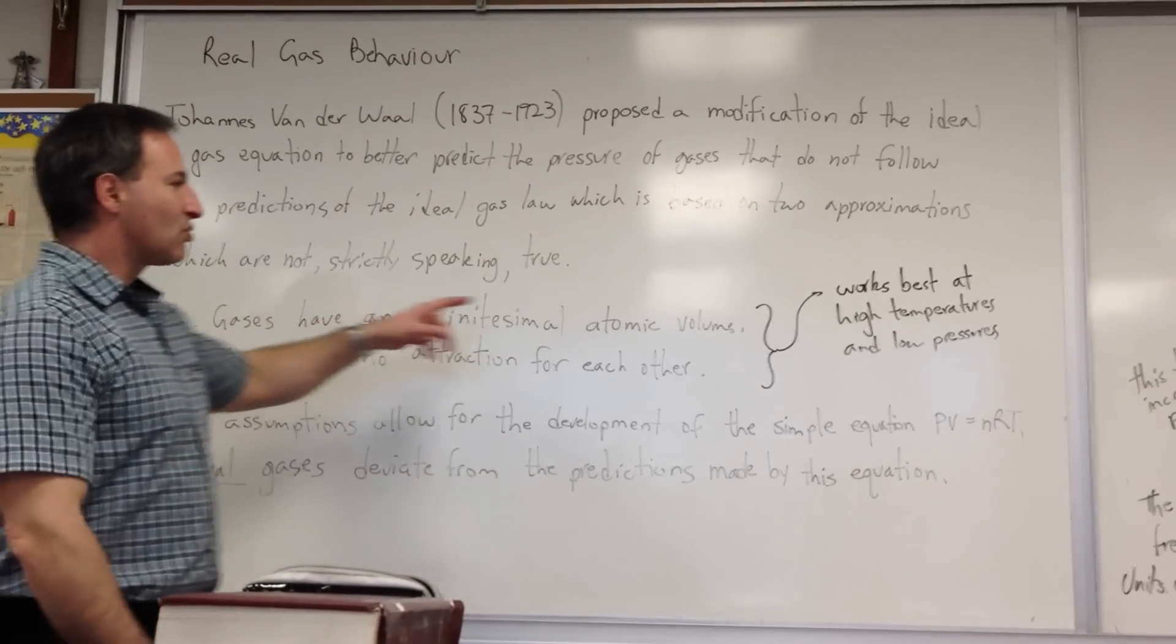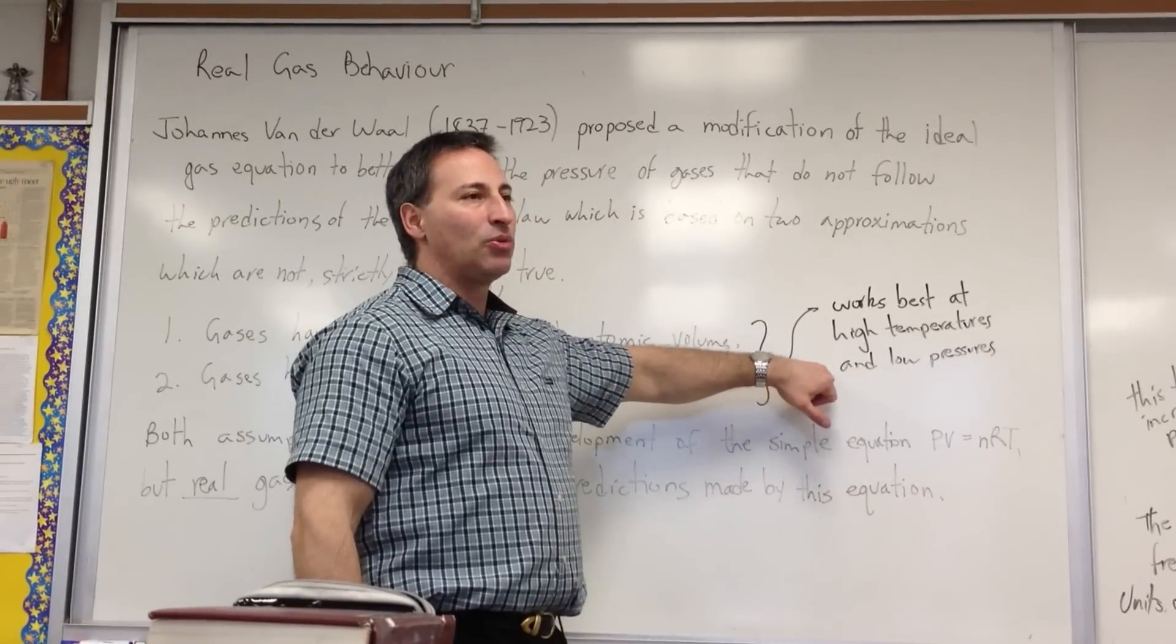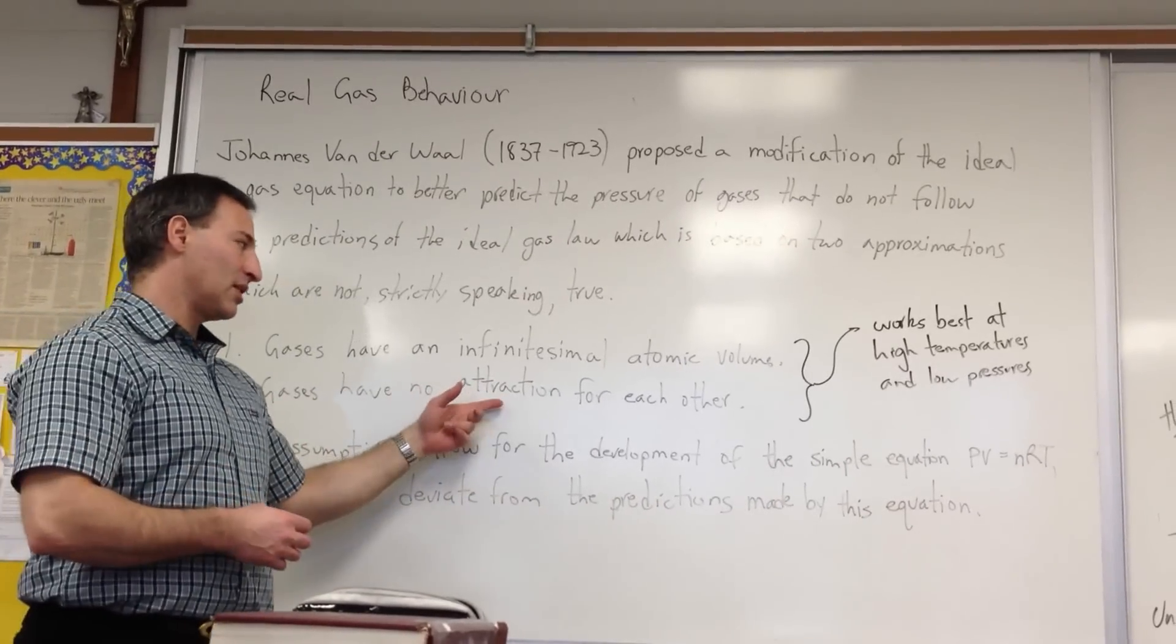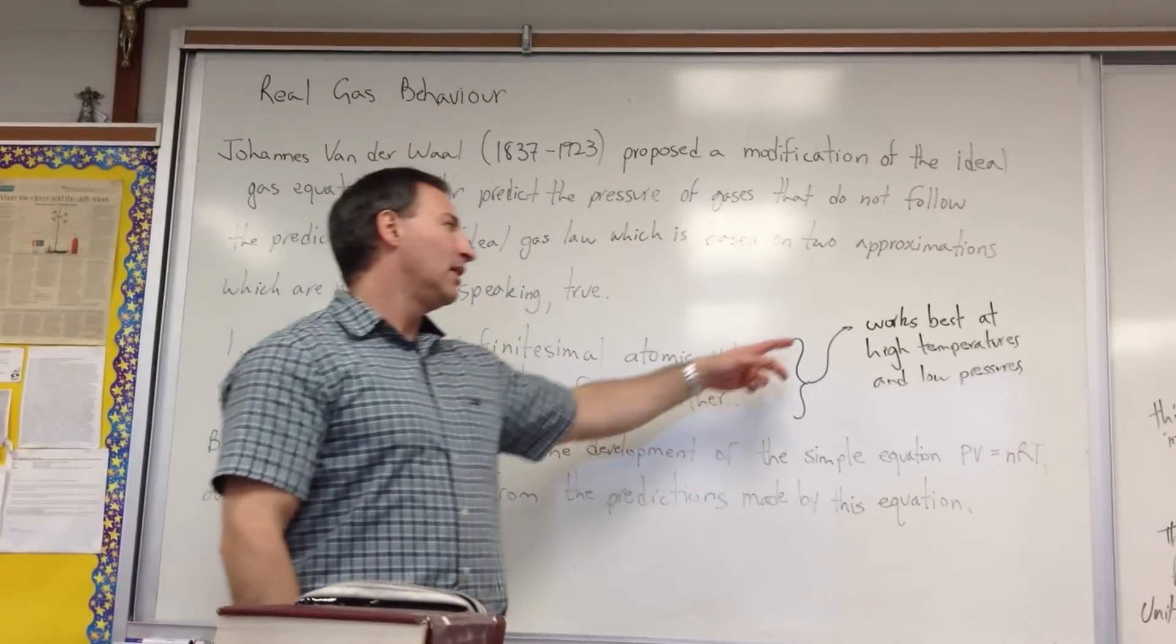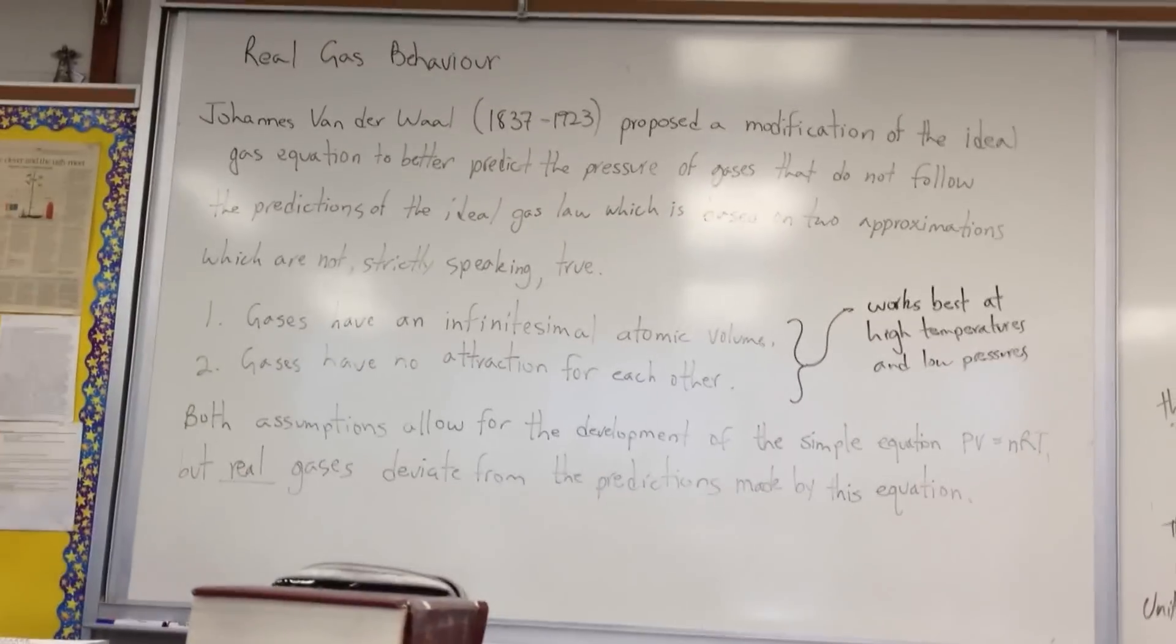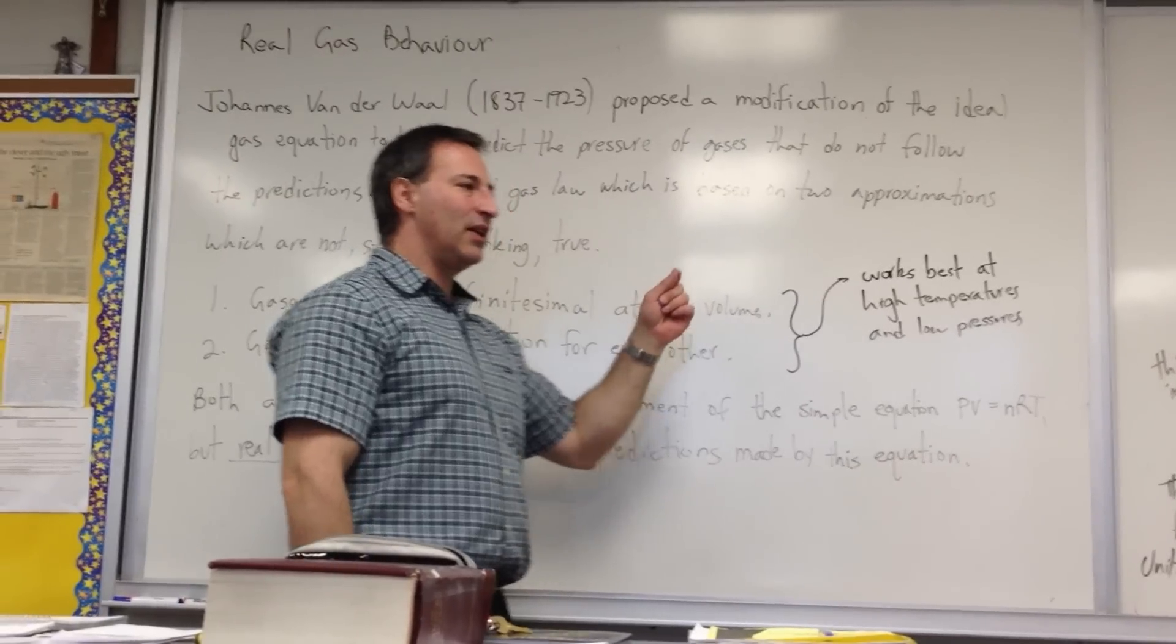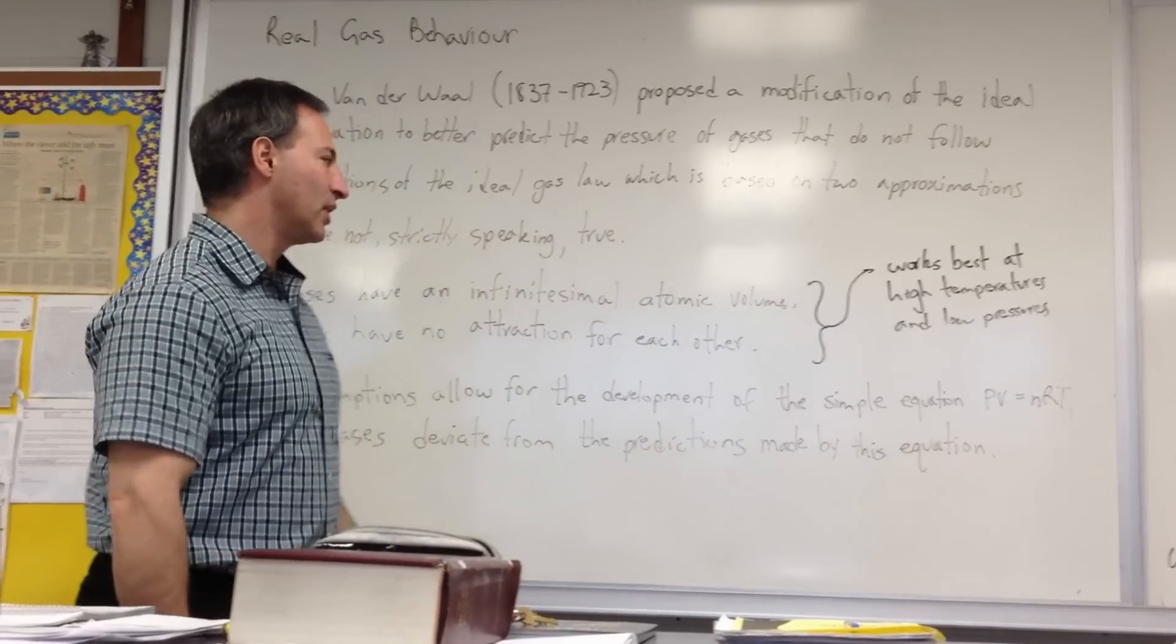And these two assumptions work best for gases that are at high temperatures and low pressures, because if a gas is at low pressures, it has fewer collisions per second, therefore fewer interactions with other molecules which it might have an actual attraction for. And at high temperatures, the gases are moving more rapidly, so each collision has more energy. So any of these things that are going to cause a slight variation are going to be small relative to the kinetic energy of the gas that's moving quickly.